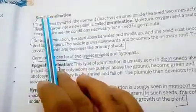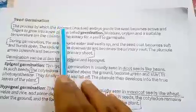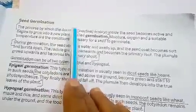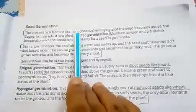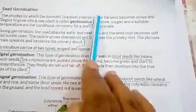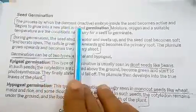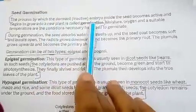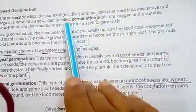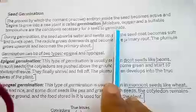Coming to seed germination. What is germination? The process by which the dormant seed — dormant means the embryo inside the seed is in an inactive state — begins to grow into a new plant when it gets suitable conditions is called germination. The conditions required are moisture, oxygen, and a suitable temperature.